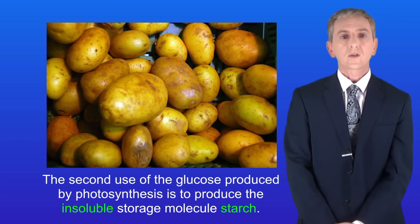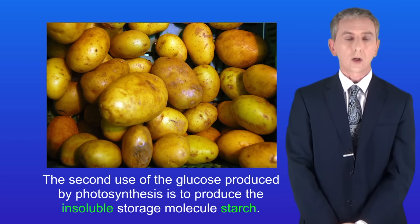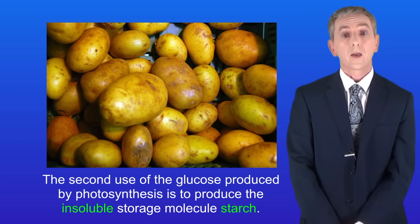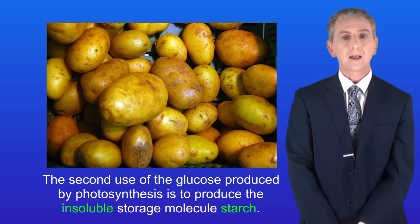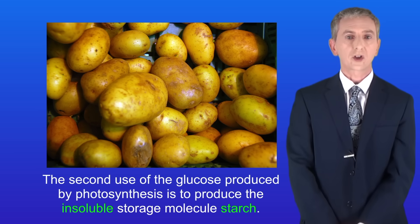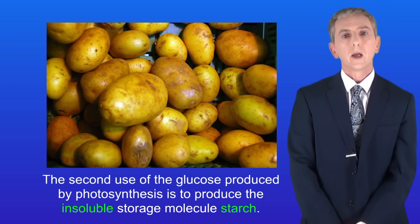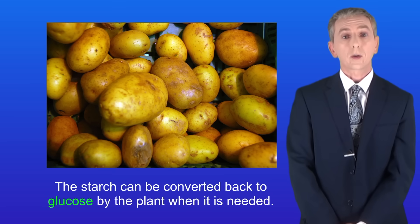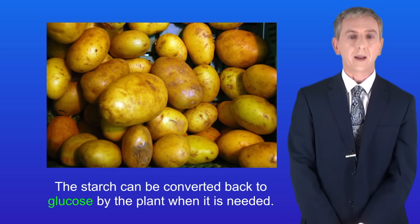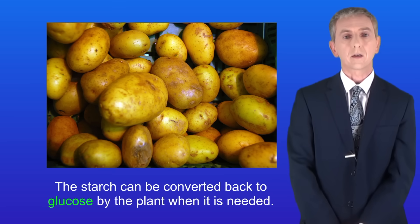So the second use of the glucose produced by photosynthesis is to produce the insoluble storage molecule starch. The starch can be converted back to glucose by the plant when it's needed, for example at night.